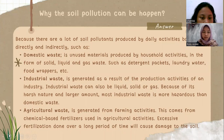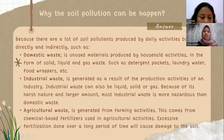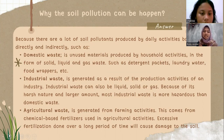Why can soil pollution happen? Because there are many soil pollutants produced by daily activities, both directly and indirectly. The first cause is domestic waste — unused materials produced by household activities in the form of solid, liquid, and gas waste, such as detergent packets, laundry water, food waste, and so on.